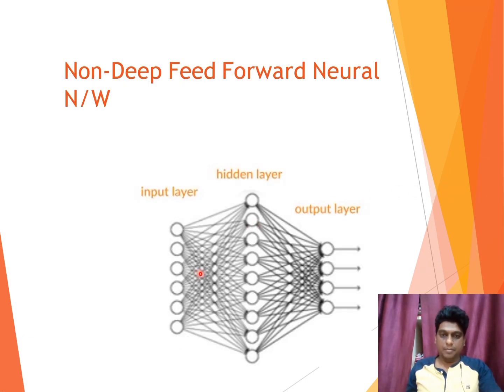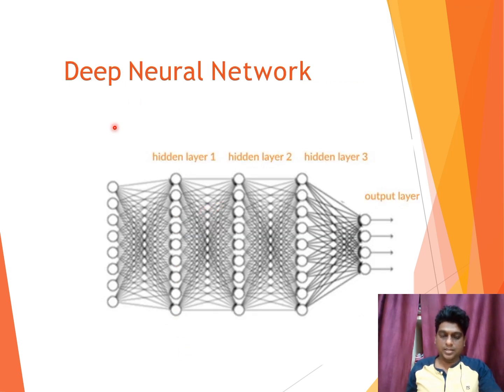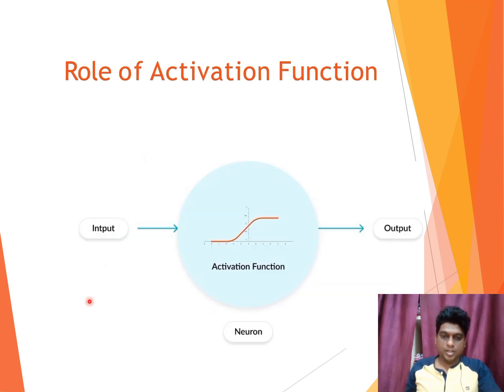This is one example for artificial neural network or a non-deep feed forward network. One input layer, hidden layer and an output layer. This is the example for a deep neural network model. Here we are having multiple hidden layers. Here we are having 3 hidden layers, an input layer and an output layer.